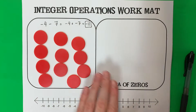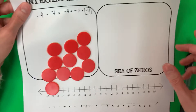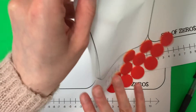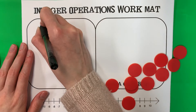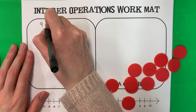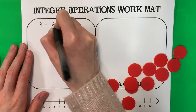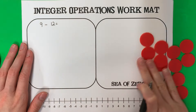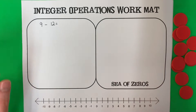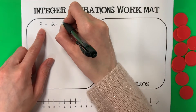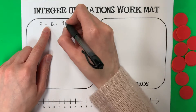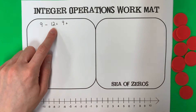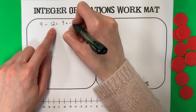Let's go ahead and do one more example. Our next example is 9 minus 12. Again, we are going to do keep, change, change. Keep 9 the same. Change: minus becomes plus. Change: positive 12 — the opposite is negative. So it becomes 9 plus negative 12.